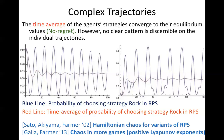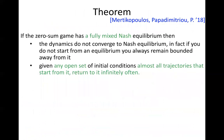Here is our key theorem: if a zero-sum game has a fully mixed Nash equilibrium, the FTRL dynamics do not converge to the equilibrium. If you don't start from equilibrium you always remain bounded away from it. Most interestingly, given any open set of initial conditions, almost all trajectories starting from this set return to it infinitely often — exactly the recurrent behavior our simulations suggested.